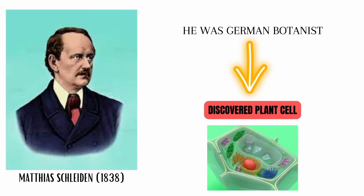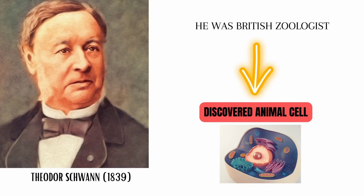First, we talk about Matthias Schleiden in 1838. He was a German botanist and he discovered the plant cell. The second one is Theodor Schwann in 1839, and he was a British zoologist who discovered the animal cell.